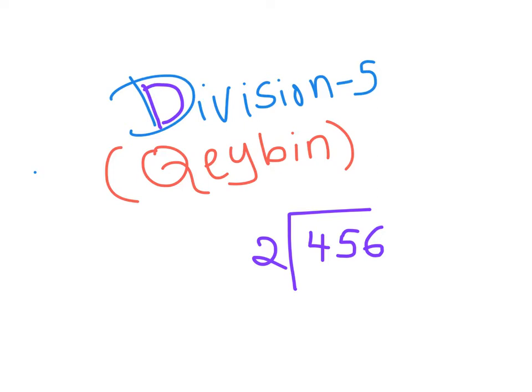456 divided by 2. Let's work through this step by step. 3 by 1 — let's do 3 by 1. That gives us 3 by 1. 3 by 1 — let's go.